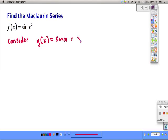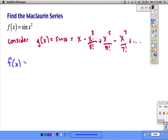Remember this is equal to x minus x cubed over 3 factorial plus x to the 5th over 5 factorial minus x to the 7th over 7 factorial, and so on. That means that f of x is equal to g of x squared.